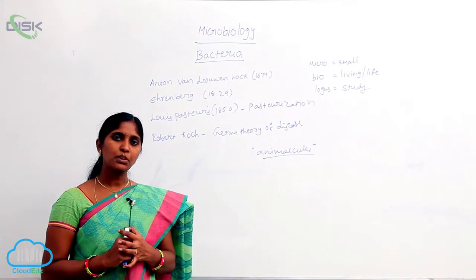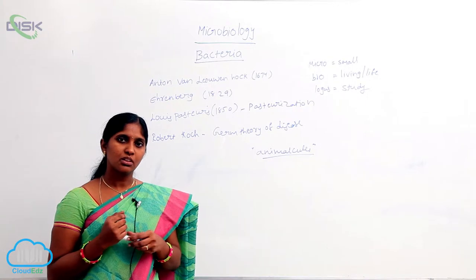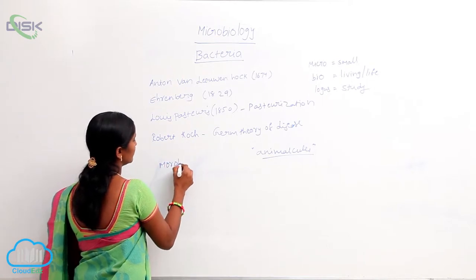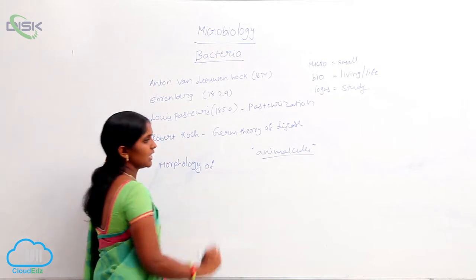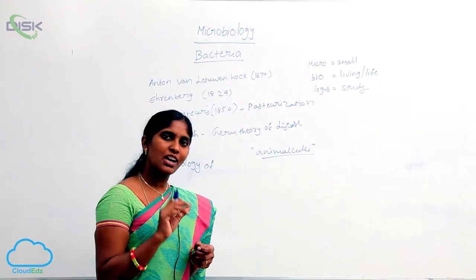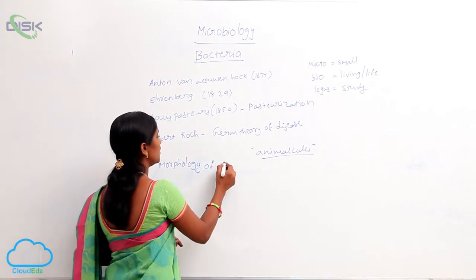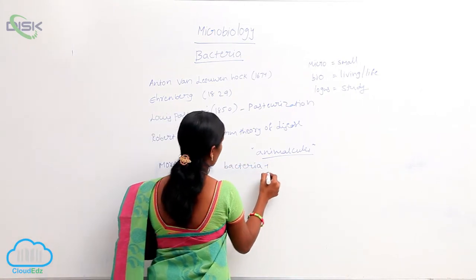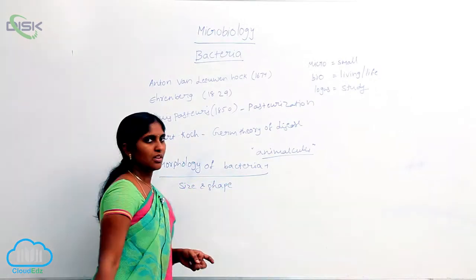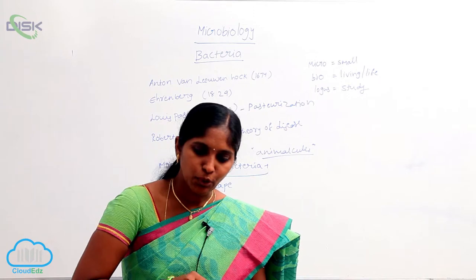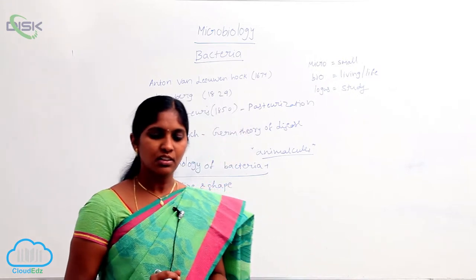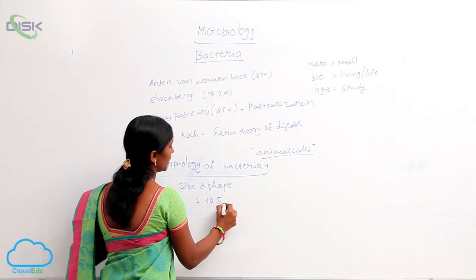Morphology of the bacteria — how the bacteria looks, meaning its structure. Morphology of bacteria is derived by its cell structure, specifically the rigid cell wall. Due to the presence of the rigid cell wall, it has one prominent structure. While studying the morphology of bacteria, it includes two aspects: size and shape. The size and shape is determined by the prominent cell wall, and the majority of bacteria range from 2 to 5 micrometers.